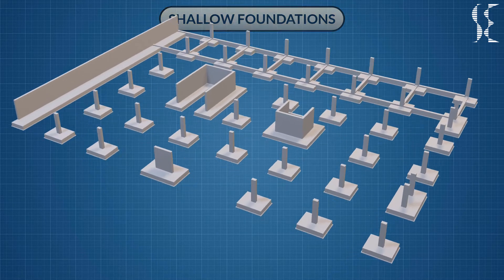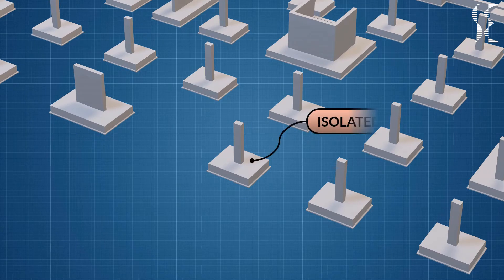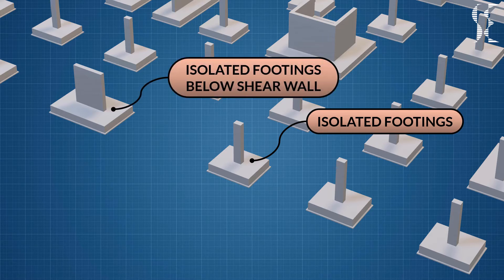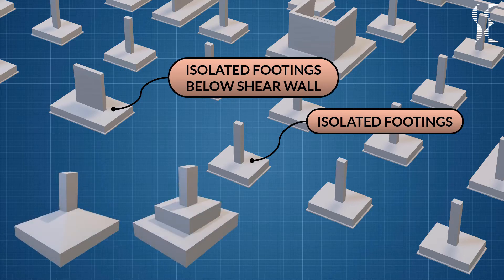First is isolated footings which are provided under each column individually. They can be just a uniform thickness, reinforced concrete pads and can be square, rectangular or circular in plan as per design and analysis requirements. They can also be provided below individual shear wall. Isolated footings can be sloped or in steps as per design or construction requirements.